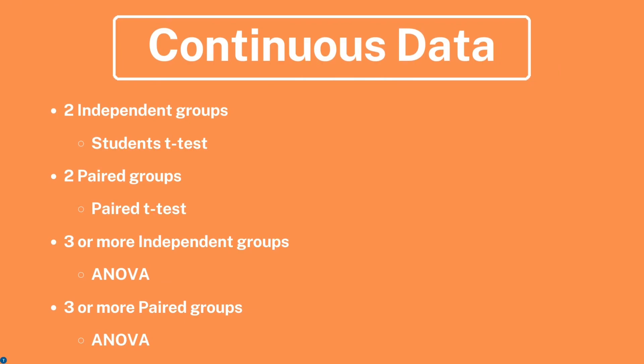On an exam or on the NAPLEX, you could be presented with a case in which you would first determine what type of data is being used, then you would see how many groups there are along with if they're independent or paired, and then you would pick the test based on those factors. Starting off with continuous data: